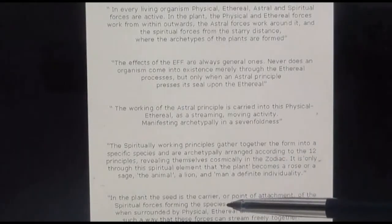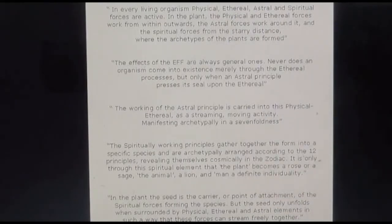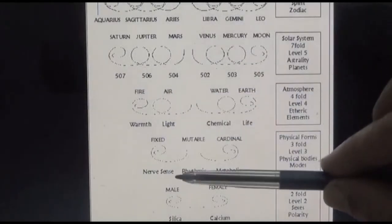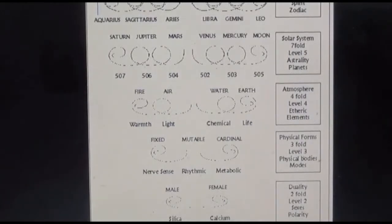In the plant, the seed is the carrier, or the point of attachment of the spiritual forces forming the species. But the seed only unfolds when surrounded by physical, etheric, and astral elements in such a way that these forces can stream freely through it together. The main point of this slide is to really just consolidate that image that we have these different, quite specific layers in our environment.